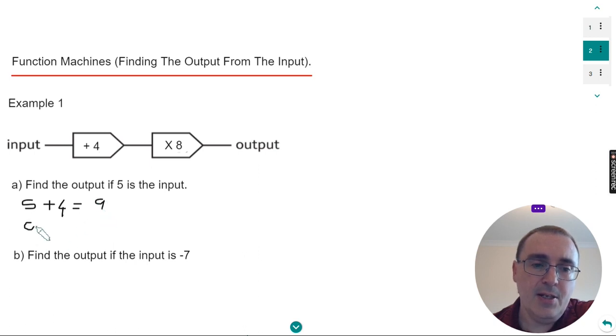Then copy nine down onto your next line. Our next operation is to times by eight. So nine eights are 72. The output will be 72 when the input is five.